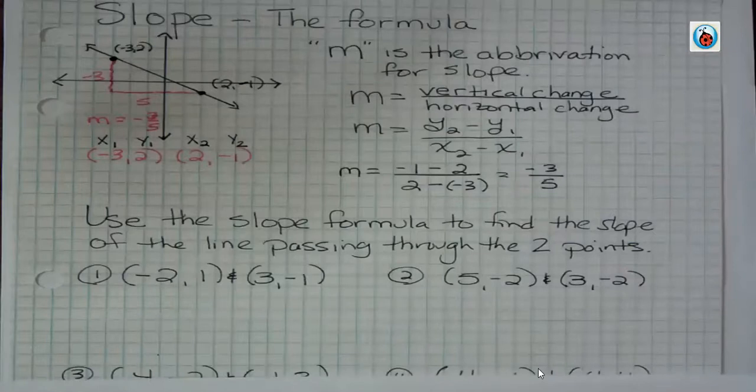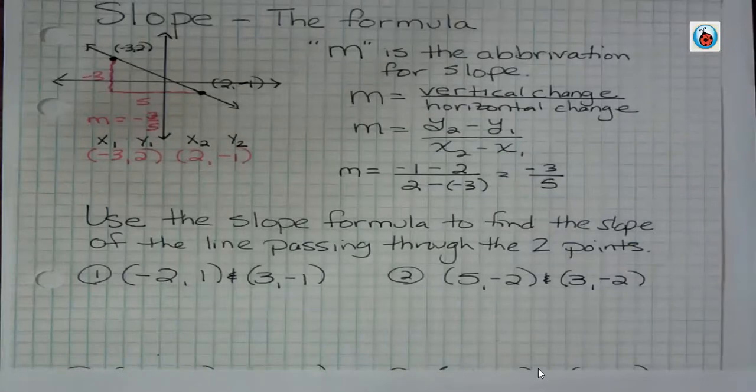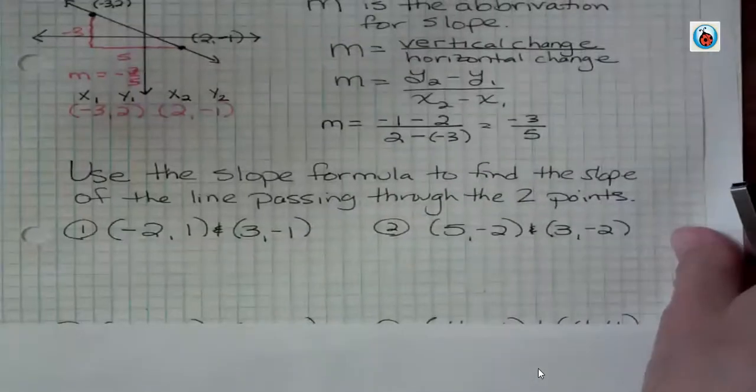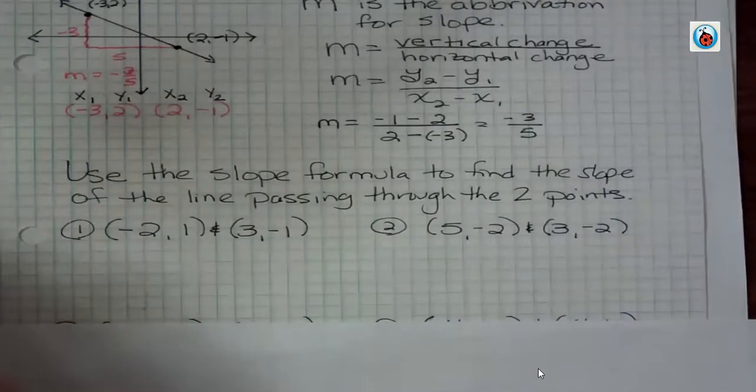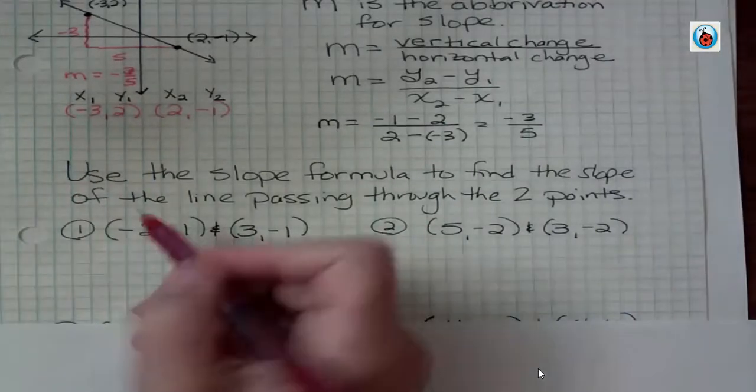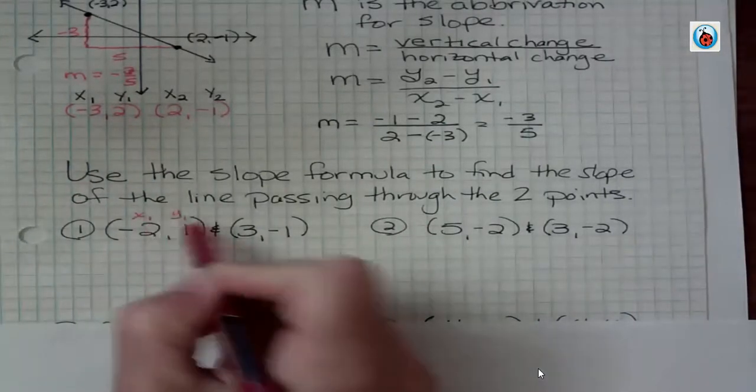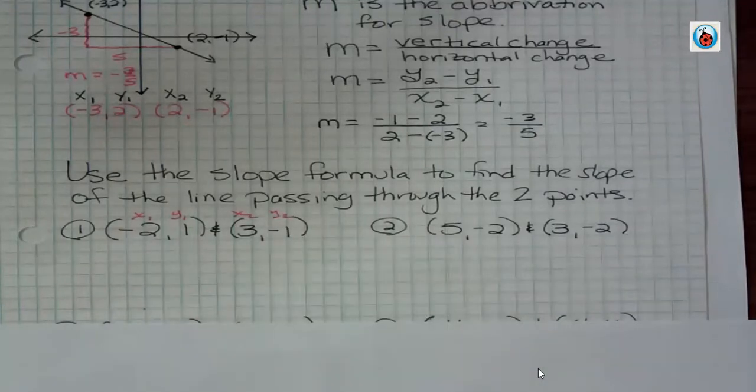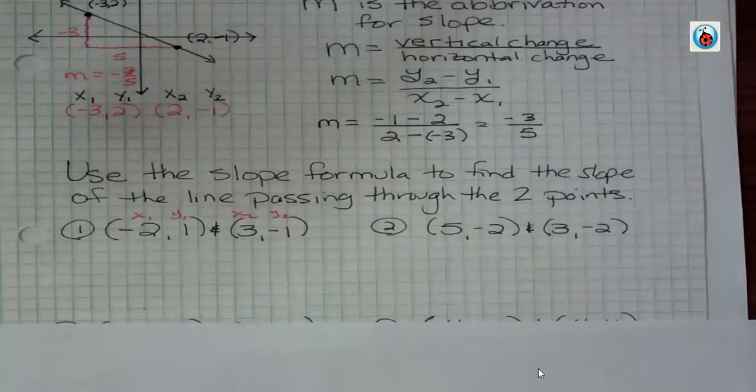So the four examples I have are just using that formula to find the slope of a line given two points. All right, so I'm just going to always label these as one and two, the way they're shown. But it doesn't matter which point you decide to be the first point and which point you decide to be the second point, you'd get the same answer.